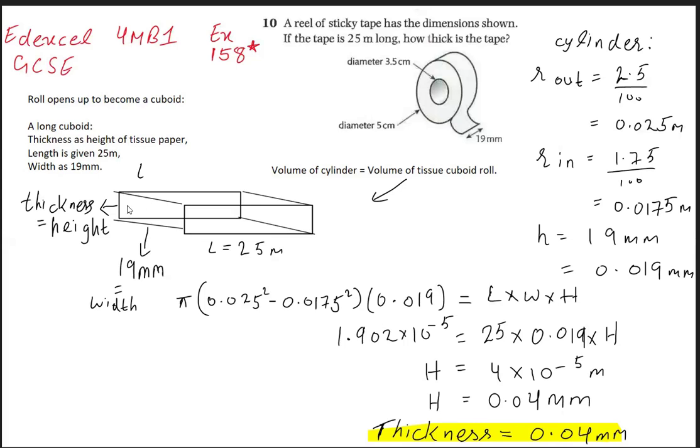What will be the thickness? That's the question. We have to find the thickness of this tape, and the width will be 19 millimeters long. To find the volume of the cylinder, you have to find the volume of the bigger cylinder with the diameter 5 centimeters or radius 2.5 centimeters, convert that to meters, minus the volume of the inside cylinder, the hollow shape.